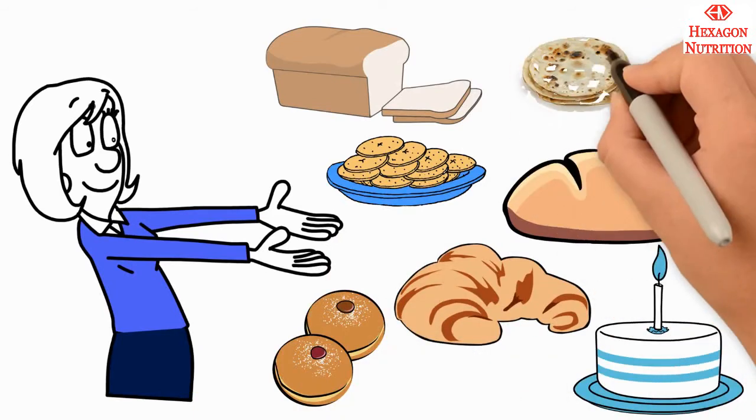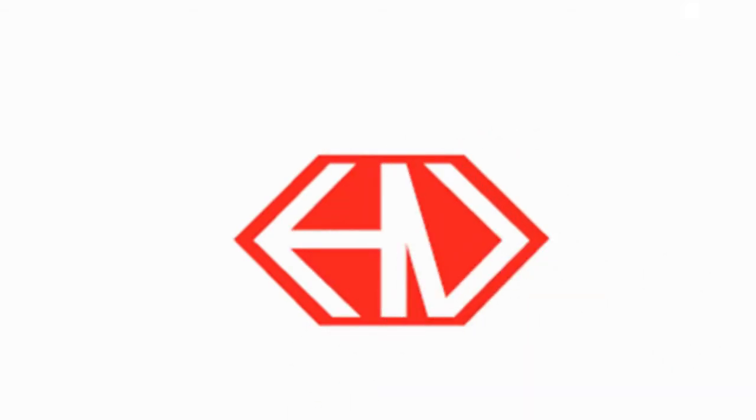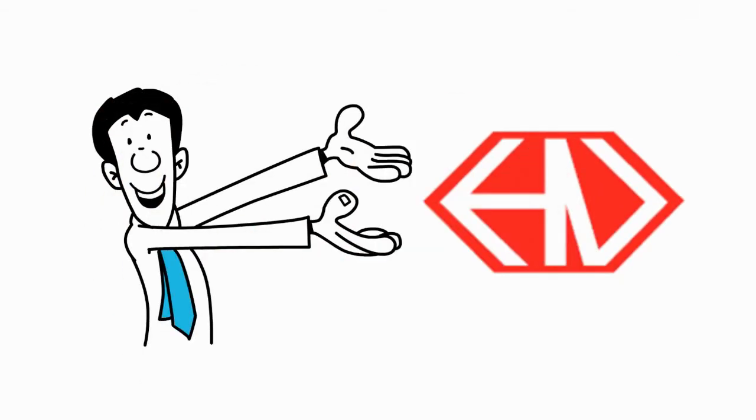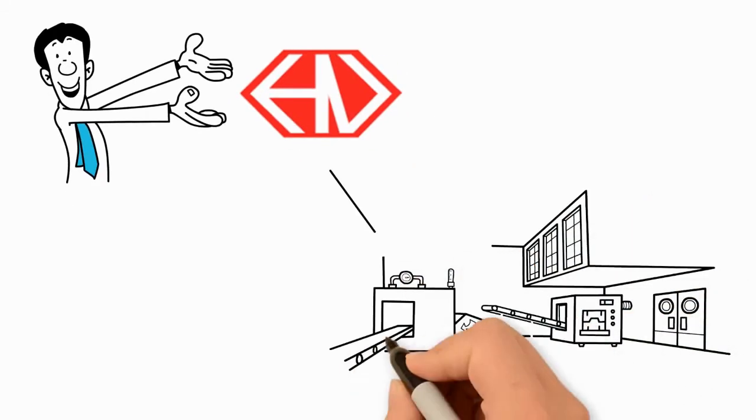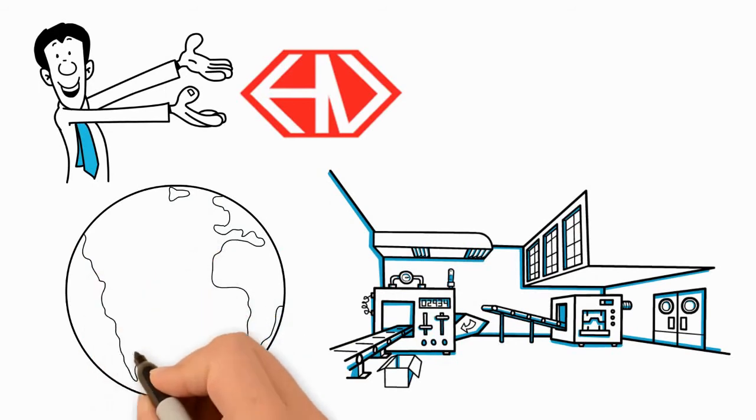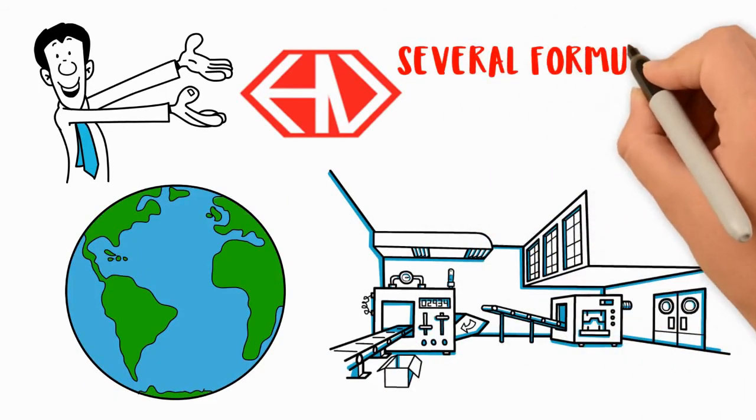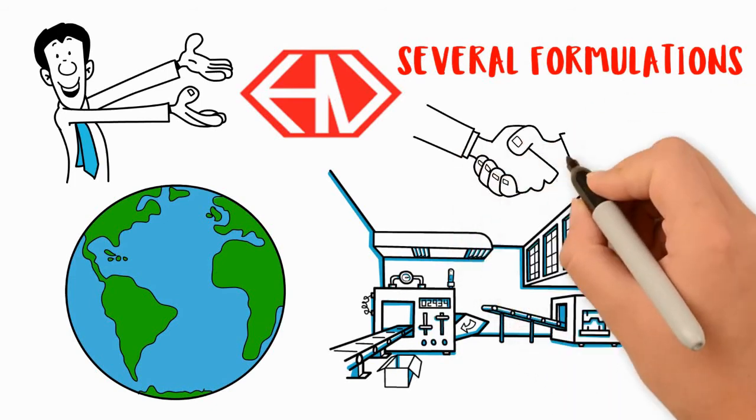Hexagon Nutrition offers a wide range of micronutrient premixes that are compatible with cereal flour. Hexagon is capable of manufacturing customized premixes with an array of macronutrients and their different salt forms. It has developed several macronutrient premix formulations for wheat flour fortification.